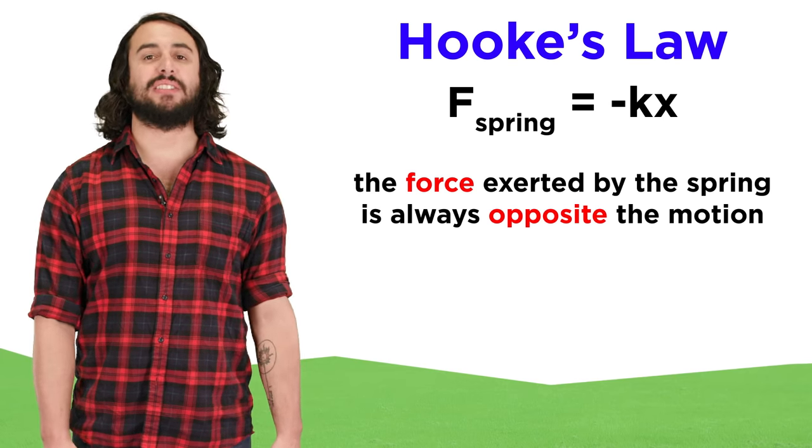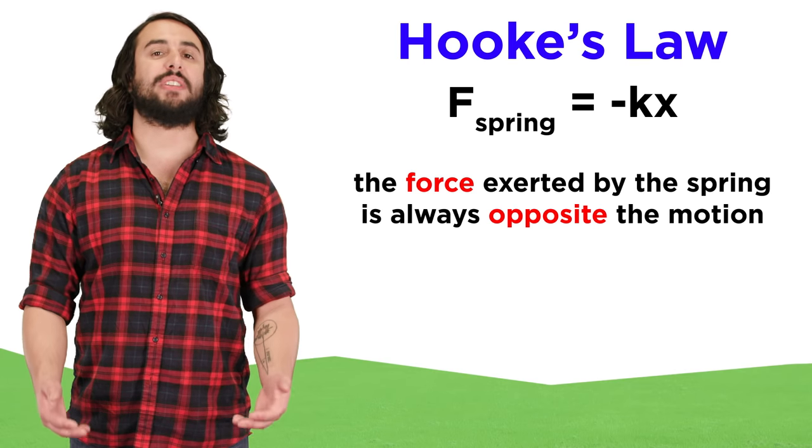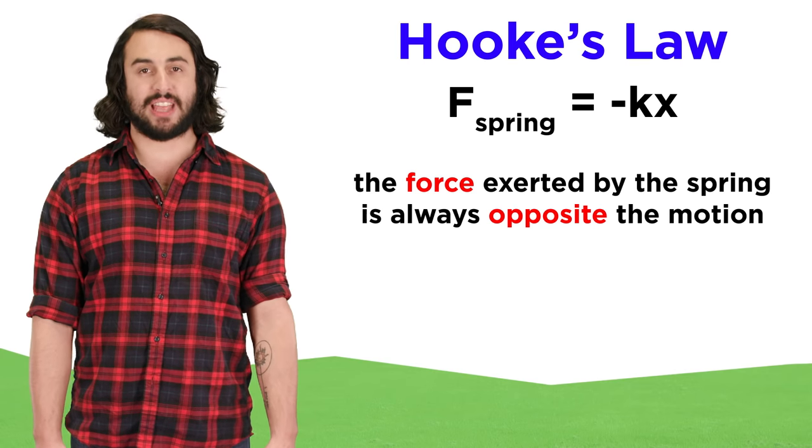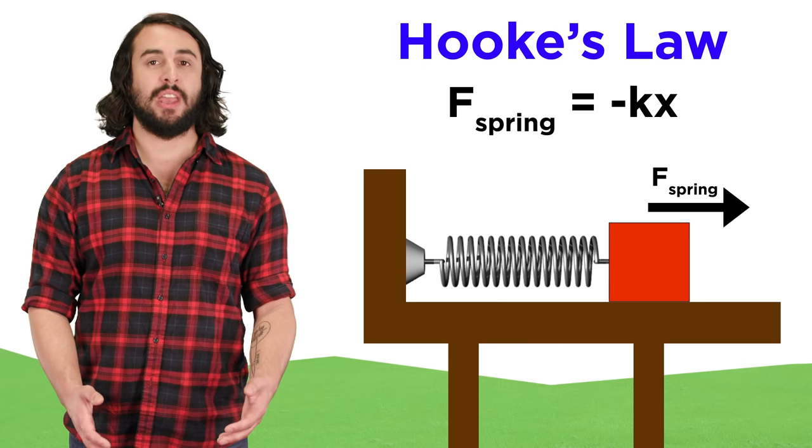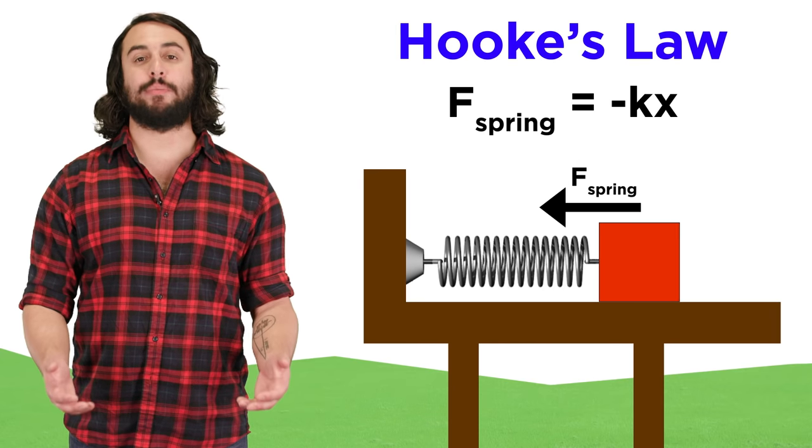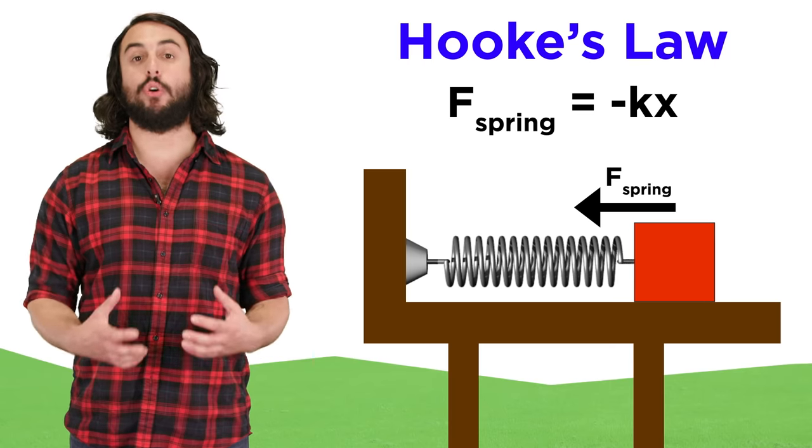The negative sign indicates that the force of the spring is always opposite the direction of the movement of the object. When the object compresses the spring, it will push out, and when the object stretches the spring, it will pull in.